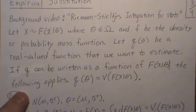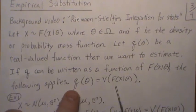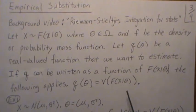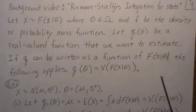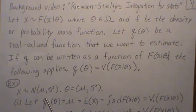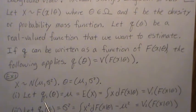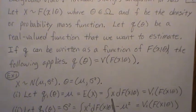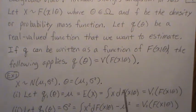If q can be written as a function of the CDF, then empirical substitution applies. This means the function of the unknown parameters can actually be expressed as a functional of the CDF F. For example, let X be normal(mu, sigma squared). If q is mu, then it equals the expected value of X, which in Riemann-Stieltjes notation is the integral of x dF(x). Here x is a dummy variable and the unknown is capital F — so the mean is truly a function of the CDF.